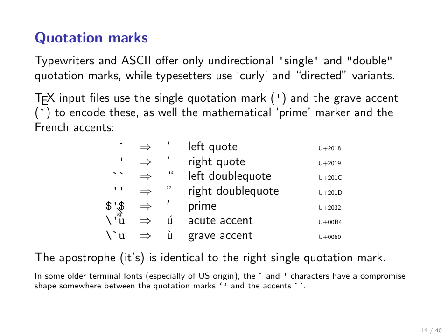If you want to put an acute or grave accent on top of a letter — for example, to typeset French words — there are also single-symbol macros that put an accent onto the next letter, using the single quote or grave accent. In some older terminal fonts, and more rarely today, the ASCII characters for the grave accent and the single vertical quotation mark are designed in a compromise shape that looks a little like either opening or closing quotation marks or the acute and grave accents, so what exactly these look like on your keyboard can vary.